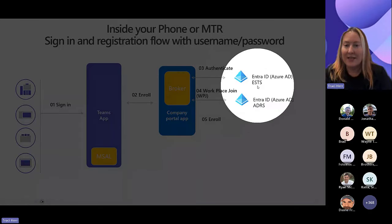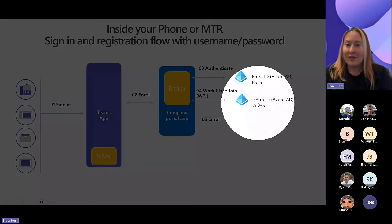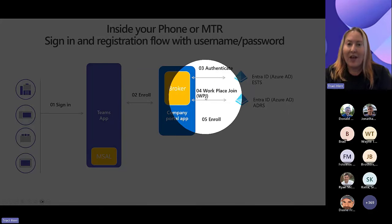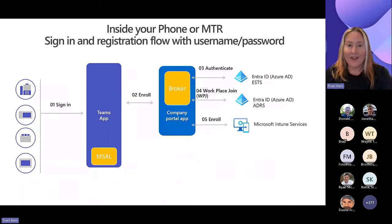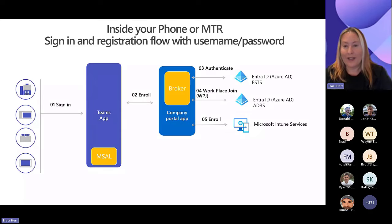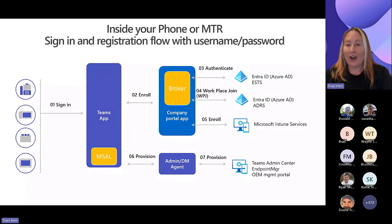The broker authenticator is responsible for authenticating to Entra using our token issuing service, ESTS — that's how we get our authentication tokens. Then we use the Azure Device Registration Service to do a Workplace Join, which creates a device object in Entra. Then we enroll into Intune, which creates another device object called an enrollment object. Finally, we come back to our Teams app and use the admin agent to create a third object in Teams Admin Center — so we have three objects to watch out for.